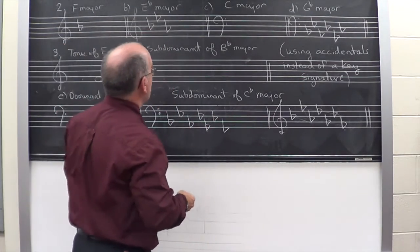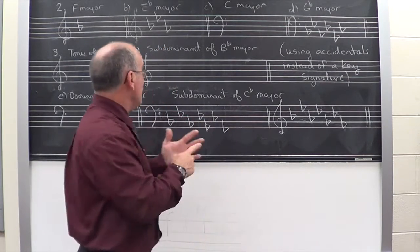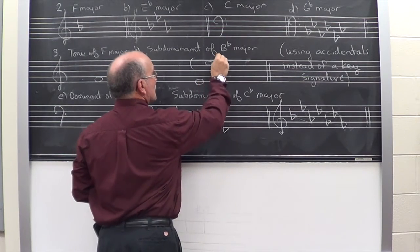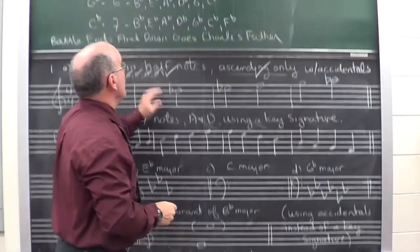Then you have the subdominant E flat major. Subdominant means the fourth note. B, C, D, E. And where you write that note E is totally up to you. It doesn't matter.